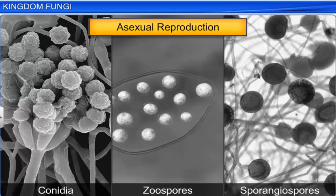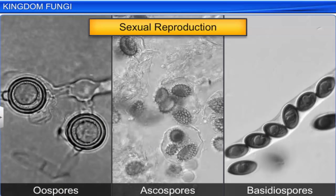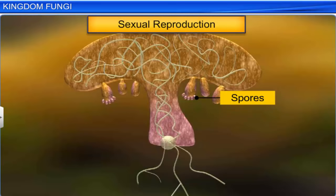They can reproduce asexually by spores — either zoospores or sporangiospores. They also reproduce sexually by either ascospores or basidiospores. All these spores are produced in structures called fruiting bodies. There are three steps in the sexual life cycle: plasmogamy, karyogamy, and meiosis.